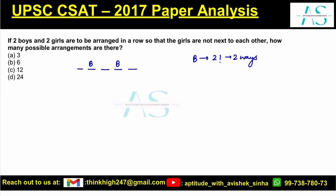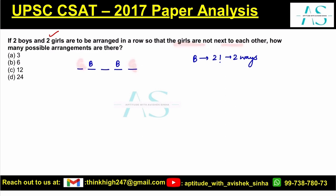Now, what about the girls? We need to place the remaining two girls such that no two girls are next to each other. You can place one girl here and the other one here, or in other available spots — in each case no two girls are adjacent. That means for the girls we have three vacant positions.